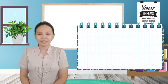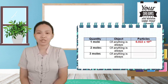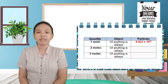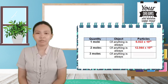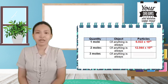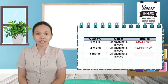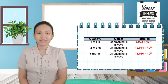To help us understand how to use mole, let's try this analogy. One mole of anything is always 6.022 times 10 to the 23rd power. This means that 2 moles of anything is always 12.022 times 10 to the 23rd power number of particles. And 3 moles of anything is always 12.044 times 10 to the 23rd power number of particles.